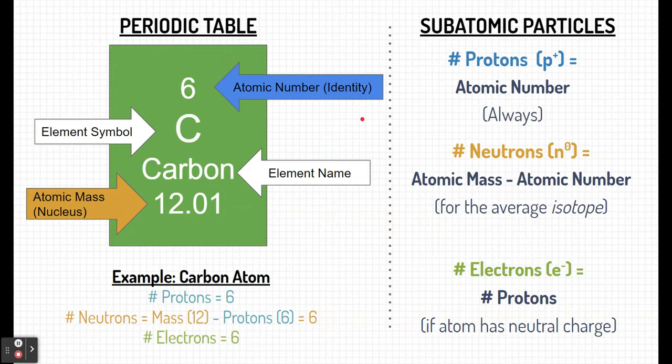Electrons are also six. Remember, electrons are the same as protons if the element is neutral, which we're going to assume that it is at the moment.